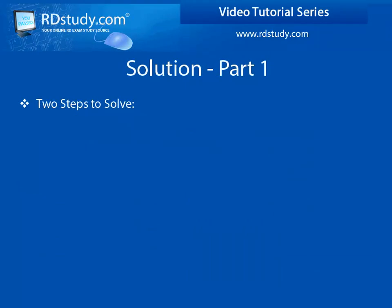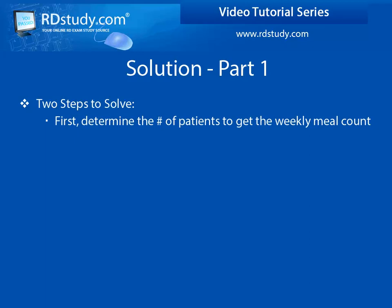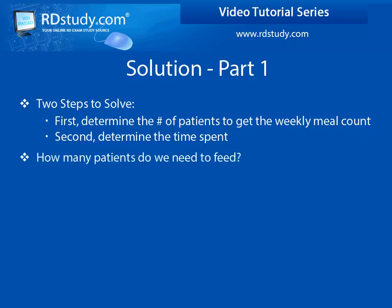We will need to break this out into two separate steps. First, we will need to determine the number of patients based upon the 80% occupancy rate. Then, we will need to determine the daily and ultimately the weekly meal count. From there, we can determine how much time 32 FTEs represent, and with both of these pieces of information, we can ultimately solve. So, let's get started.